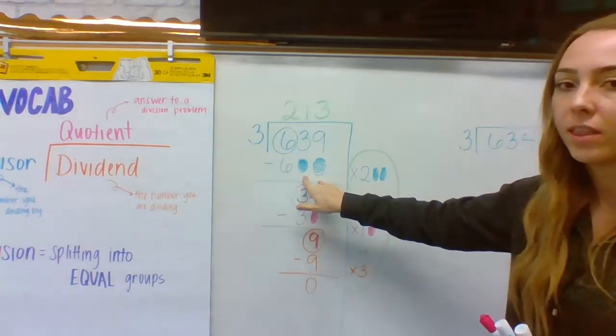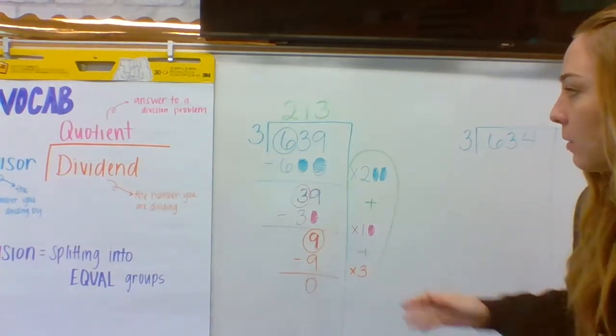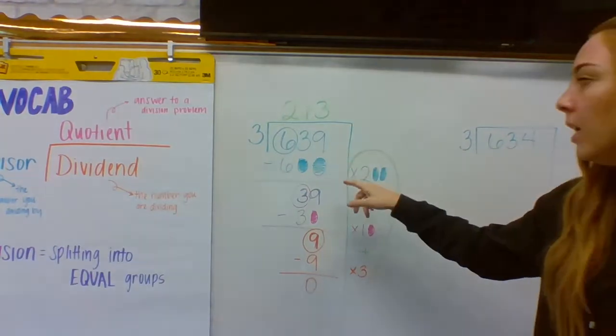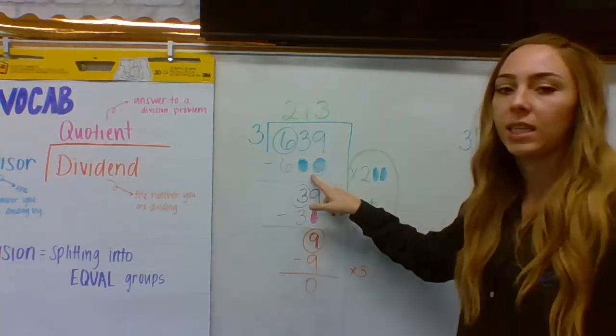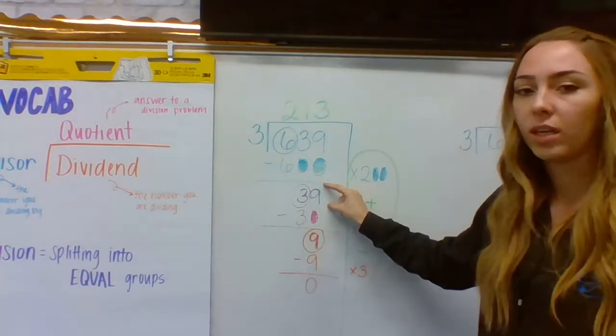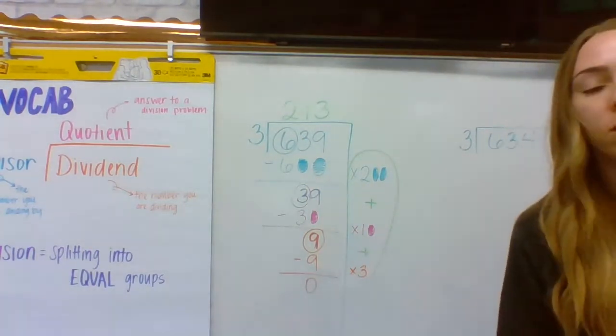Add my two zeros. Can't forget those because I don't want to just take away six when I could take away 600. If I take away 200 groups of three, 600, I'm left with 39.